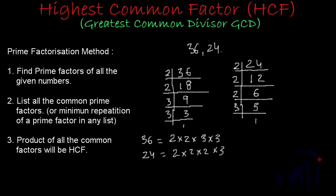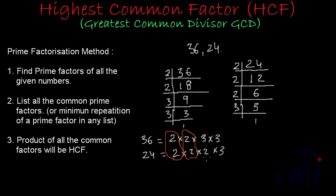What do I mean by this? If I list all the common factors, I have to search for common factors in both these lists. This 2 is common in both the lists. Then there is one more 2 which is common in both the lists.